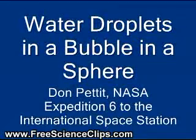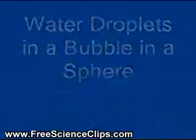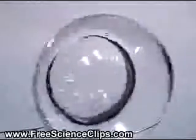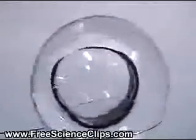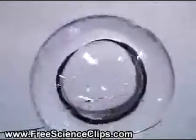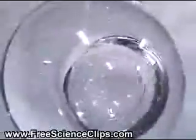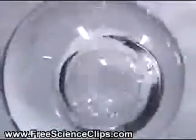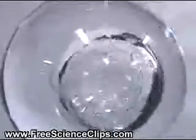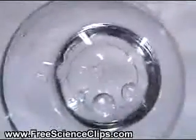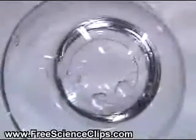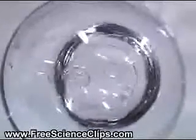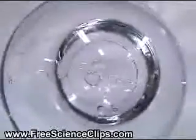Water droplets in a bubble in a sphere. Here we have a sphere of water 75 millimeters in diameter with an air bubble inside about 35 millimeters in diameter, and we inject water droplets anywhere from 1 to 8 millimeters in diameter into the bubble and look at the resulting collision dynamics where they collide with each other and the walls.